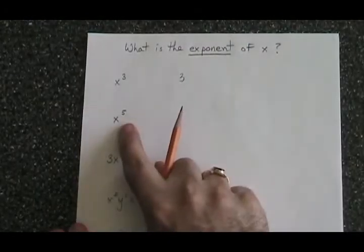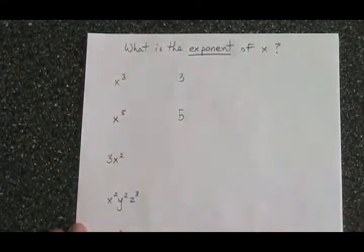If we have x to the 5, the exponent is 5. This is quite simple.